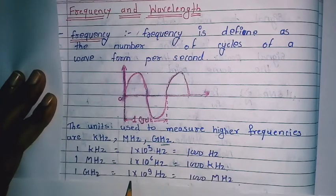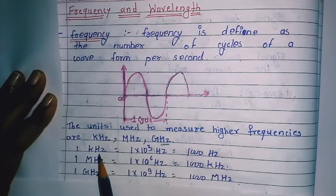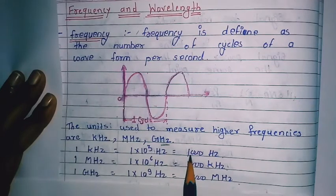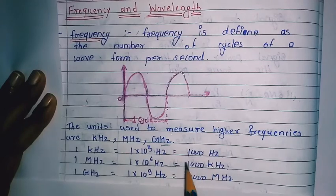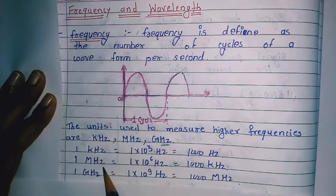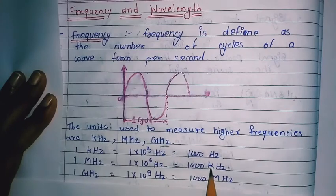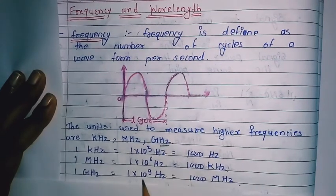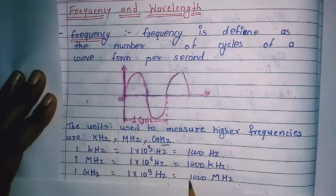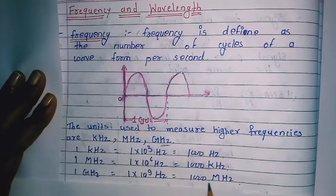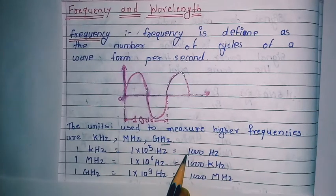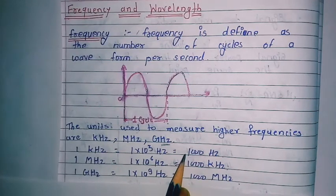Now see the conversion of frequency. If it is 1 kilohertz, then it will be 1 × 10³ hertz, which is 1000 hertz. If it is 1 megahertz, then it will be 1 × 10⁶ hertz. And if it is 1 gigahertz, then it will be 1 × 10⁹ hertz, which is 1000 megahertz.